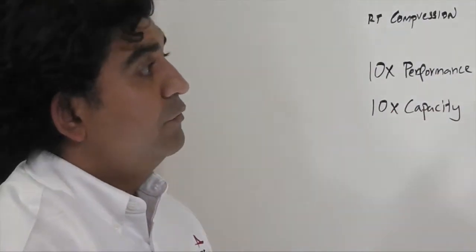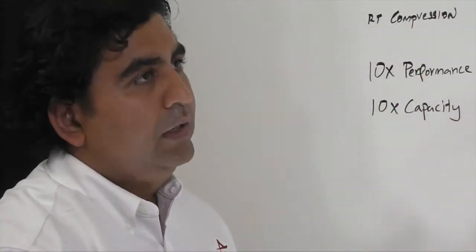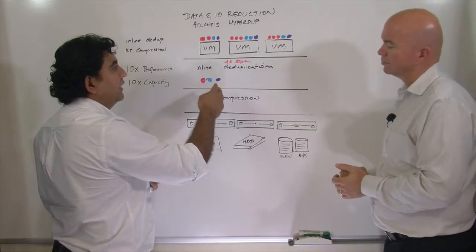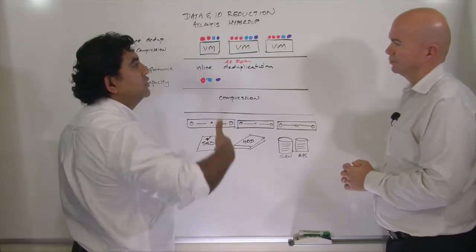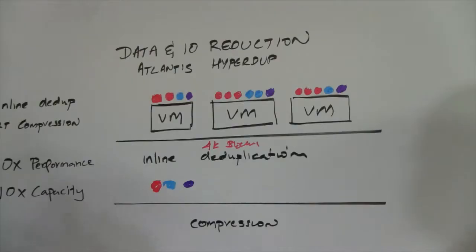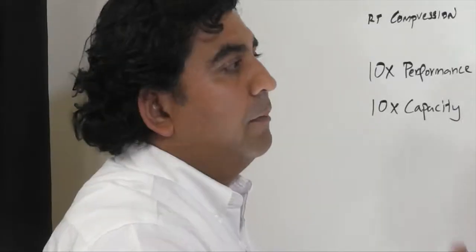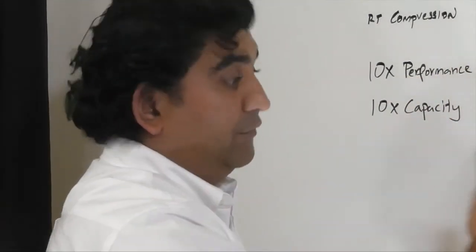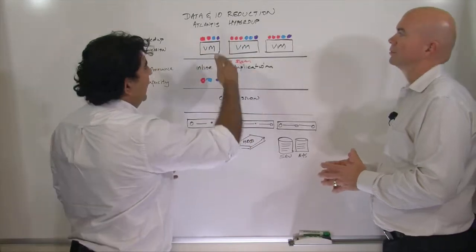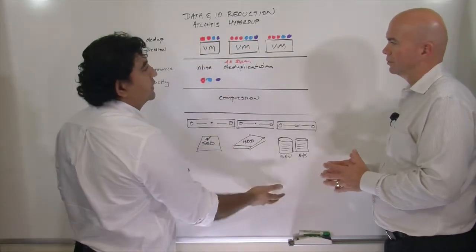And the second thing that we leverage deduplication for is actually accelerating the performance. And that's because we've very cleverly introduced deduplication in the IO path and we change the way we acknowledge writes for IOs based on whether data is duplicate or unique. So we only pay the penalty of actually committing all the way down to the physical storage tier if data is unique because there's only one copy of it. But for all the data that is actually duplicate of stuff that's already in the system, we can actually acknowledge it right away and simply make changes to our metadata and persist that.